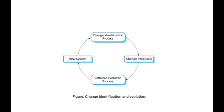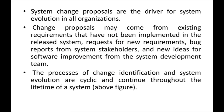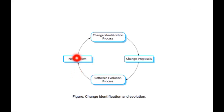The change will be identified, then a proposal is sent to you. You will add that change to your software, and once the change is added you will get the new system with the added change. For this new system, if you want to add another change, you identify that change, prepare it, and add it again. The same process repeats. System change proposals are the driver for system evolution in all organizations — the proposal contains what changes have to be done to your software, and once added you get the new system with the extra feature.